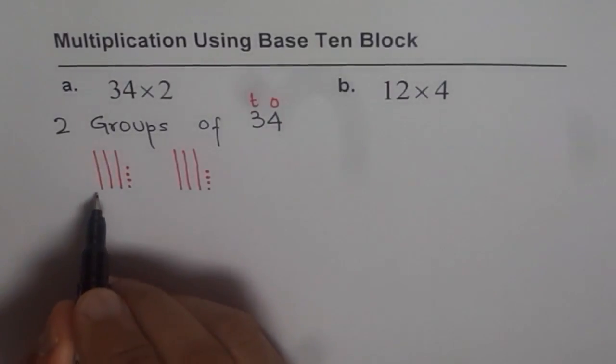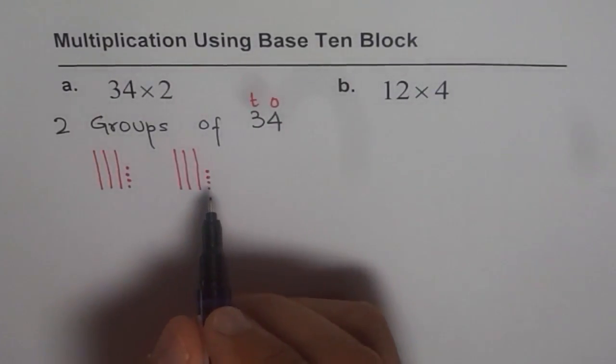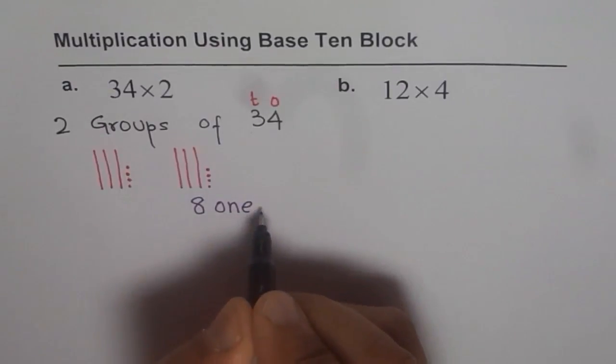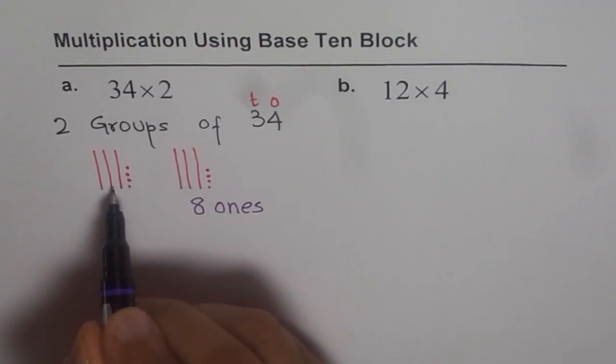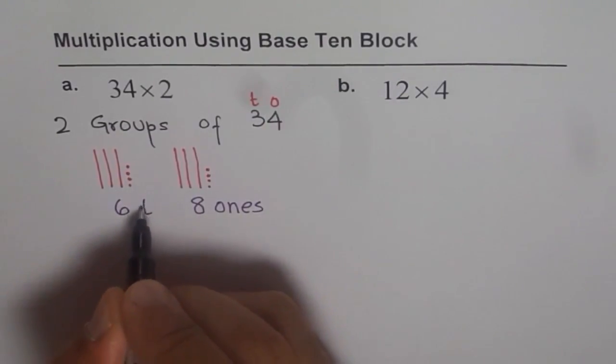2 groups of 34. Let's count. So 1, 2, 3, 4, 5, 6, 7, 8. So I get 8 ones, right? And how many tens? 1, 2, 3, 4, 5, 6. 6 tens.